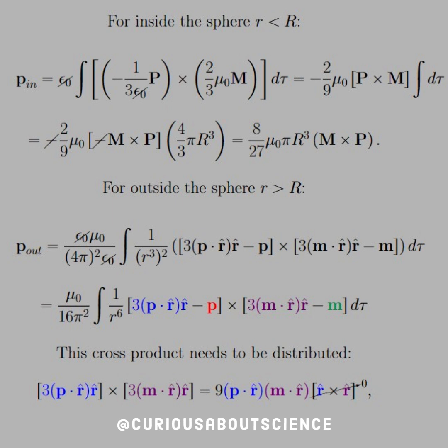So if we're going to deal with the inside first, we can do that pretty quickly. For little r less than big R, the radius of the sphere, we have P in. Just go ahead and plug in the cross product. You see the epsilons canceling, no big deal. Two-thirds and one-third gives us negative 2 over 9, mu-not. Then we have P cross M, d tau. Now, we can rewrite this as changing the order of the cross product, but we have to put in a negative sign, anti-commutative, of course. And the tau is a sphere, so you get 4 thirds pi R cubed. So, simplify that through. You get 8 over 27 mu-not pi R cubed, M cross P.